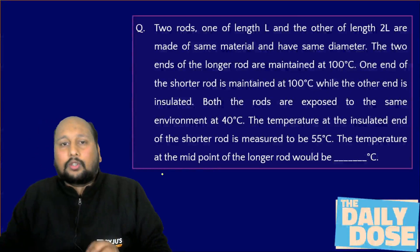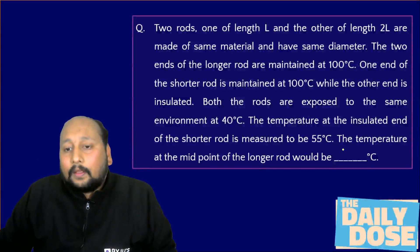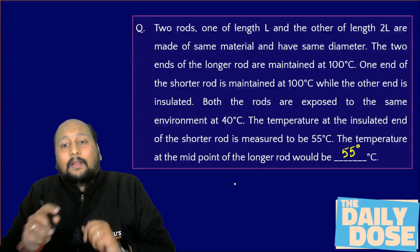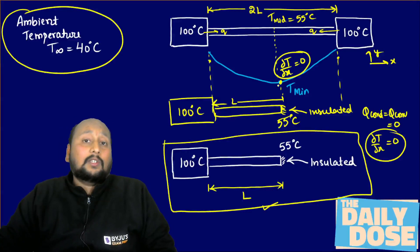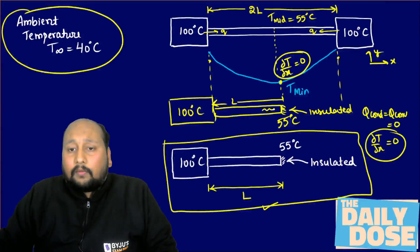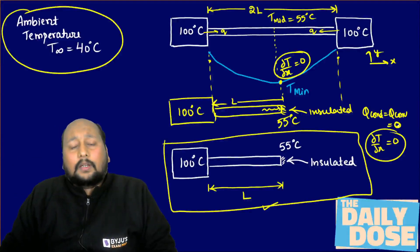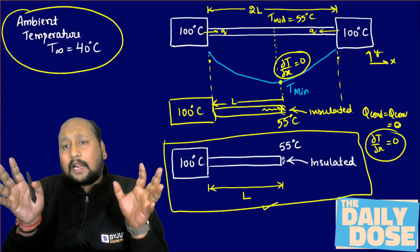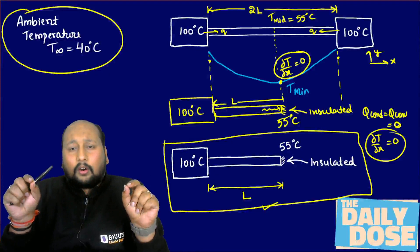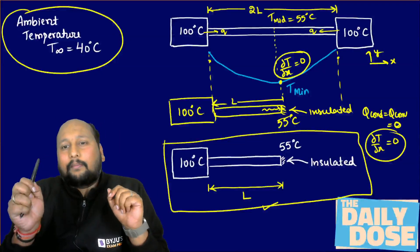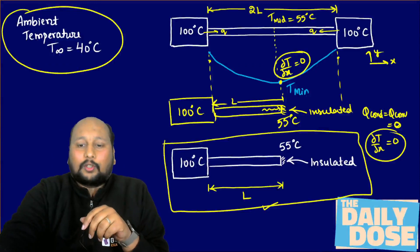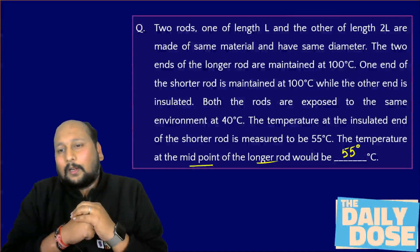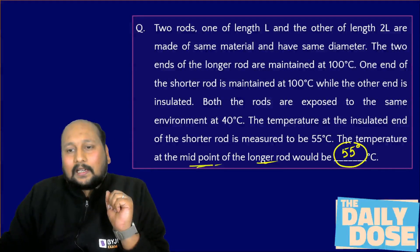Without even solving any equations, we can directly conclude that 55°C is the temperature at the midpoint of the longer rod. The midpoint has minimum temperature → dT/dx = 0 → insulated tip condition. This concept shows that when two equal sources are connected at both ends of a rod, the midpoint acts as an insulated tip with minimum temperature, and its value equals the insulated-end temperature of the equivalent shorter rod.